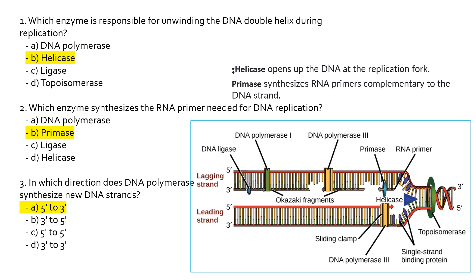The first question: which enzyme is responsible for unwinding the DNA double helix during replication? The correct answer is helicase. The role of this enzyme is to open up the DNA at the replication fork — it unwinds the DNA.